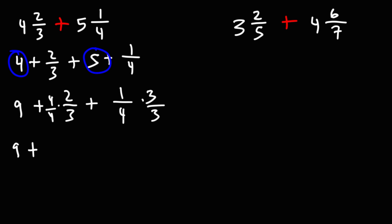When multiplying two fractions, we need to multiply across. 4 times 2 is 8. 4 times 3 is 12. Here we have 1 times 3, which is 3. 4 times 3 is 12.